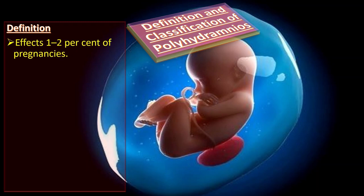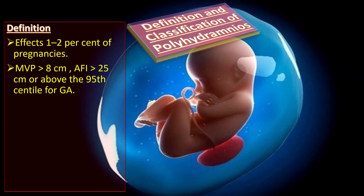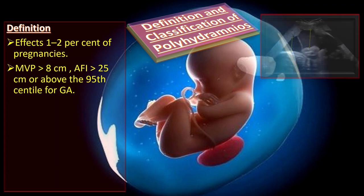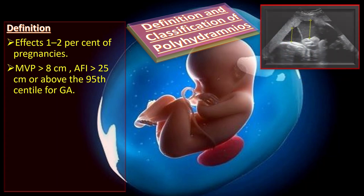Polyhydramnios affects 1-2% of pregnancies and it is defined as the maximum vertical pool of more than 8 cm, amniotic fluid index of more than 25 cm, or above the 95th centile for gestational age.